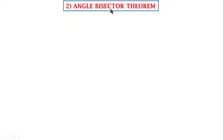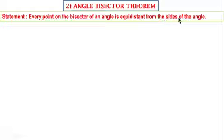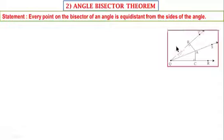Angle Bisector Theorem. Statement: Every point on the bisector of an angle is equidistant from the sides of the angle. See this figure.